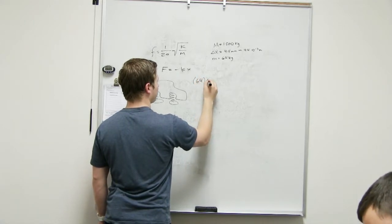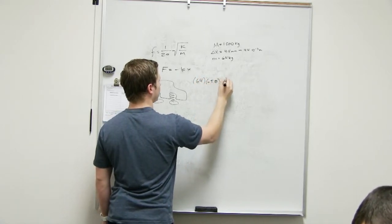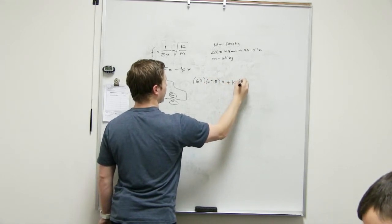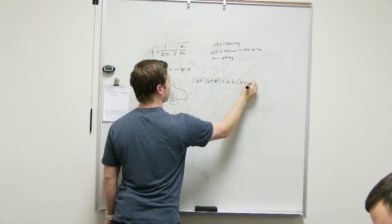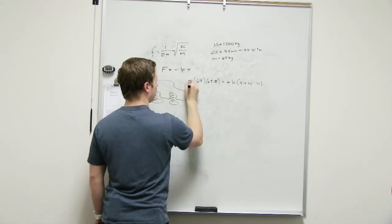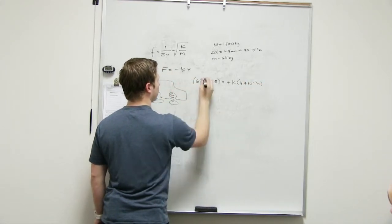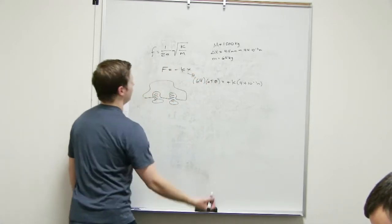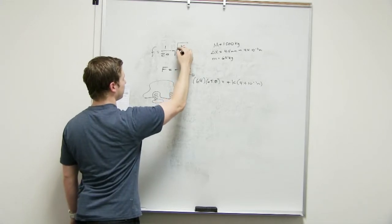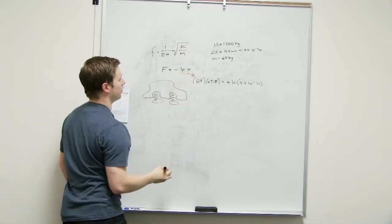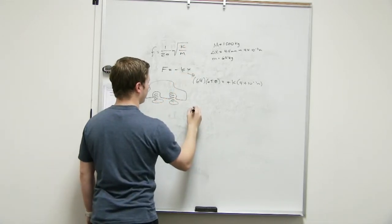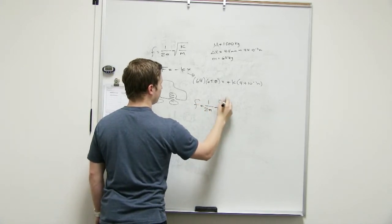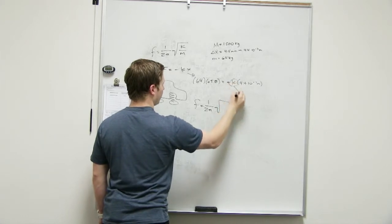So it would just be the mass times the gravity to get the force. So it would be like 64 times negative 9.8 equals negative. So those would just become positive. K is what we're solving for. And then change of X, which is 4.4 times 10 to negative 3 meters. That's that. That's the right version. And then once you solve for K, you can just plug it into this equation.